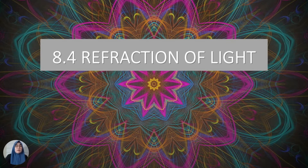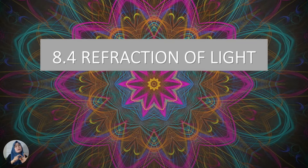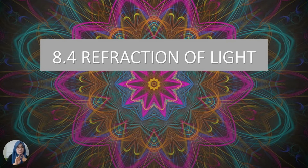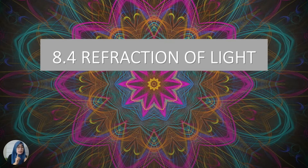We already learned about 8.3, which is reflection of light. You have learned about the law of reflection. There are five terms: number one, incident rays; number two, reflected rays; number three, normal line; number four, angle of incidence; and number five, angle of reflection. Light reflected obeys the two laws of reflection: number one, the incident ray, normal line, and reflected rays all lie in the same plane; and number two, the angle of incidence is equal to the angle of reflection.